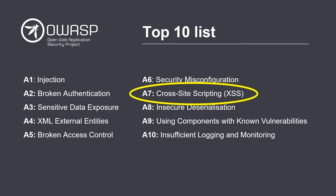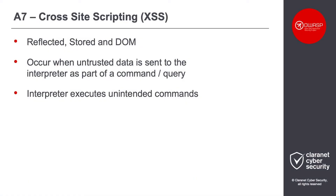Let's jump into the one we are covering today: A7 cross-site scripting. There are three main types of cross-site scripting — reflected, stored, and DOM — and I will get into some examples of each a little bit later. Cross-site scripting occurs when untrusted data is sent to the interpreter by a malicious user as part of a command or query. This can be through form input fields, via the URL, or various other ways. The interpreter then executes these unintended commands, leading to unintended code execution.